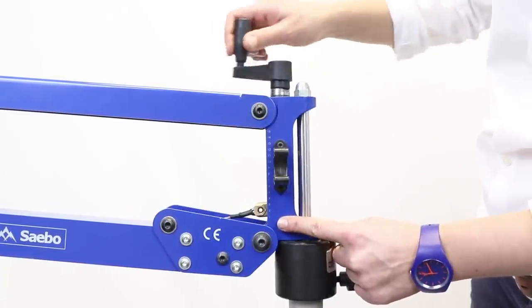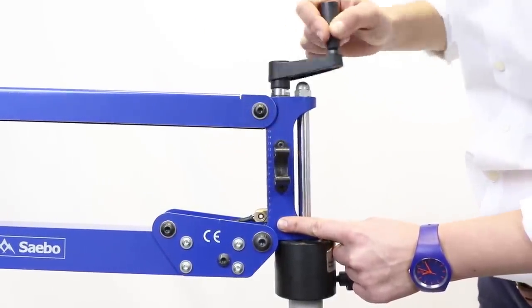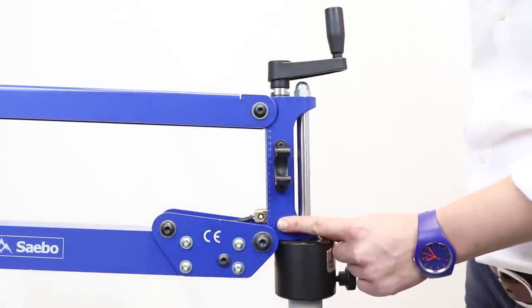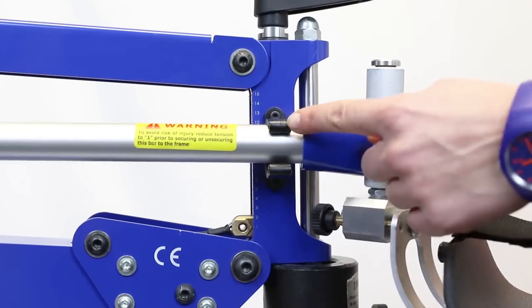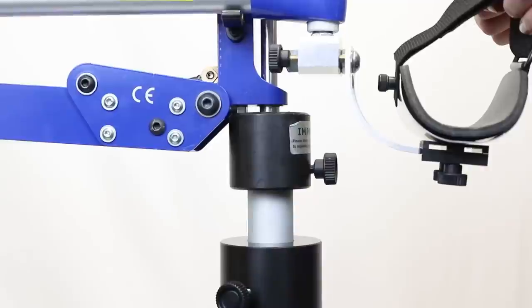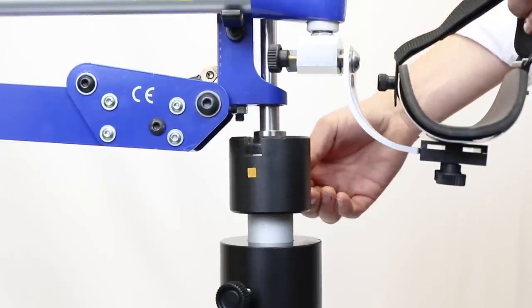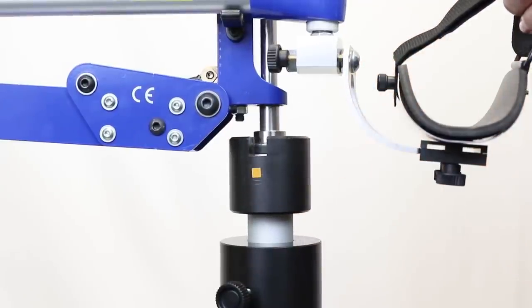Make sure that the tension scale is reduced all the way down to one. Next you need to unclip the parallelogram followed by undoing and sliding down the anti-swivel device to ensure that the parallelogram is free to move.